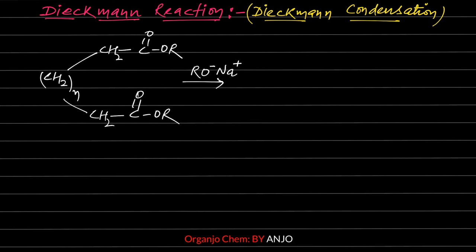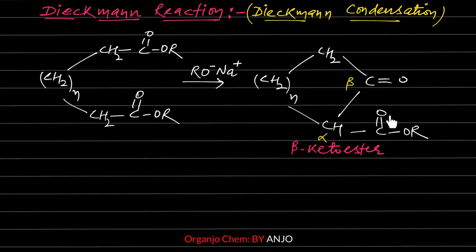In Dieckmann condensation, a cyclic beta-keto ester is formed as the final major product. The value of N (the chain length between the two ester groups) can be 2, 3, or 4. When N = 2, a 5-membered ring forms; when N = 3, a 6-membered ring forms; and when N = 4, a 7-membered ring forms.